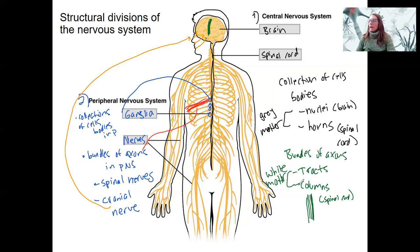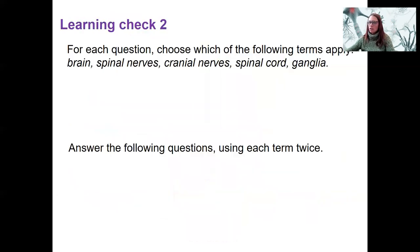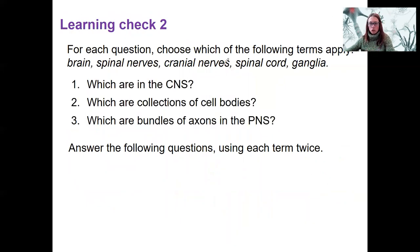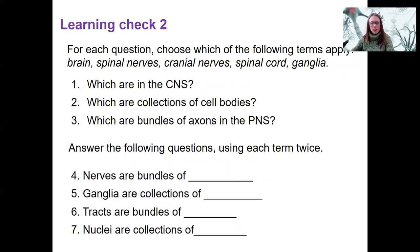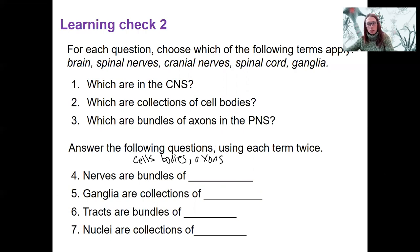That covers the structural components that make up the structural divisions of the nervous system. Let's do a learning check. We'll do functional divisions next.